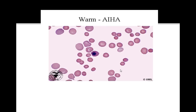This slide shows AIHA (autoimmune hemolytic anemia), and again, these findings can help you narrow down your differential as you approach schistocytes and other conditions.